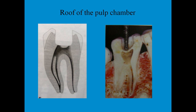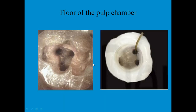The roof of the pulp chamber is the thin dentine just above the pulp chamber. These are the extensions of the pulp horns into the dentine. For any successful endodontic treatment, we should completely de-roof the pulp chamber — meaning we have to completely remove the roof of the pulp chamber — only then can we gain access into the pulp chamber.